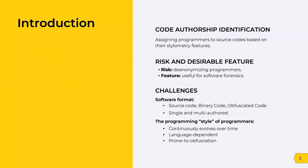First, let's define the problem. Code authorship identification is assigning authors to code samples based on the coding style of programmers. This is based on the fact that programmers tend to develop a distinctive style as they code, and if we capture this feature, we can simply identify the programmers when we see their code. This can be beneficial in the field of software forensics, such as settling authorship disputes or identifying authors of malware.